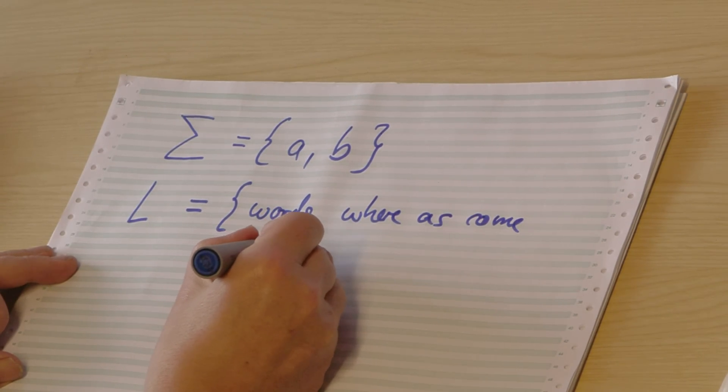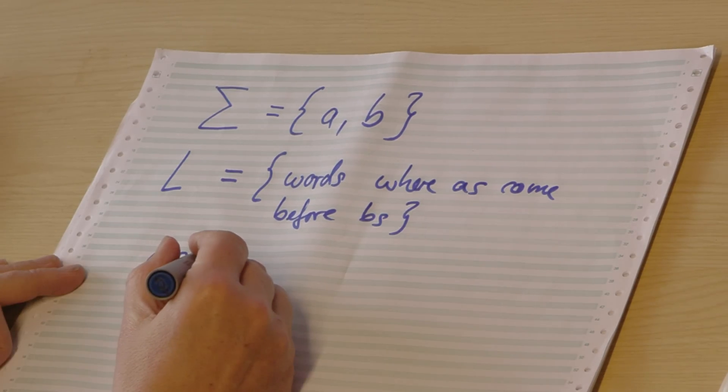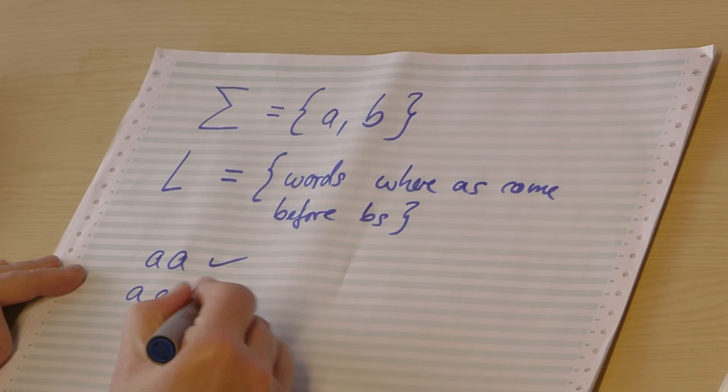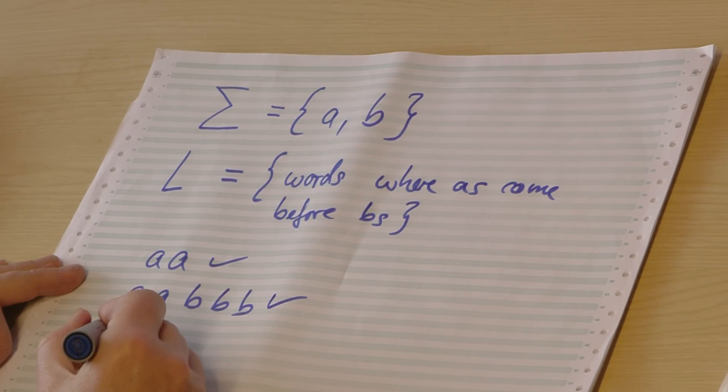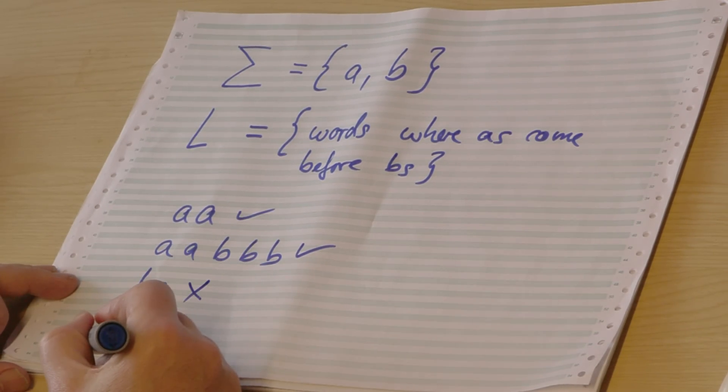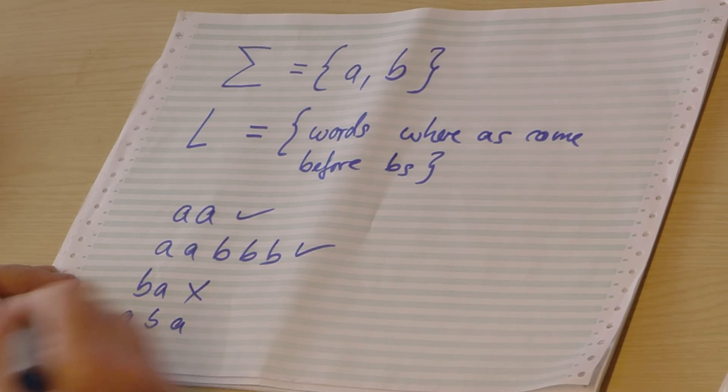Some examples: a a - is this okay? Yeah. a a b b b - b is definitely before a? No. What about b a? No. And what about a b a? No, that can't be. What about epsilon, the empty word? Oh, that's okay.